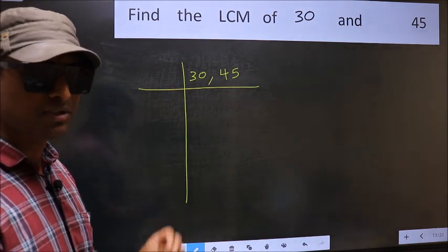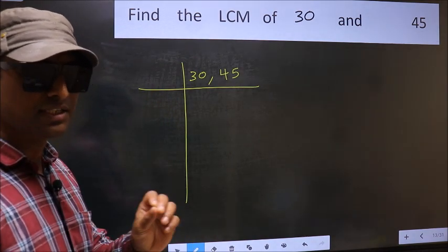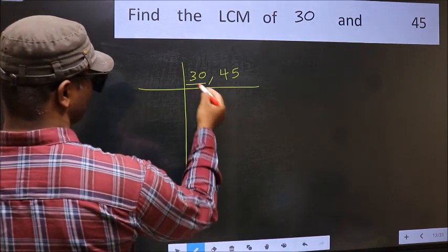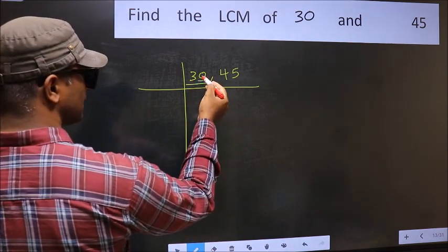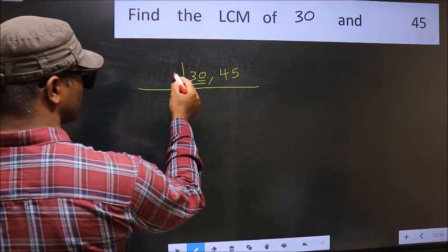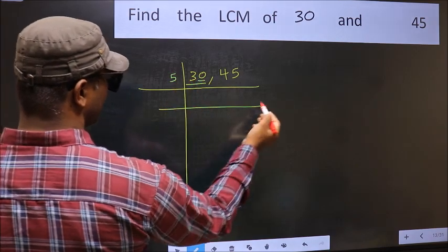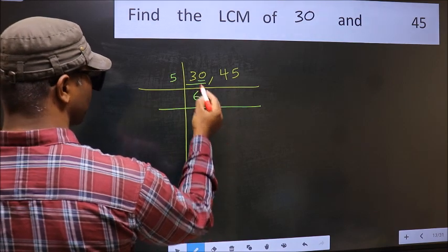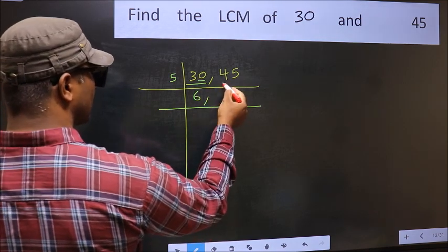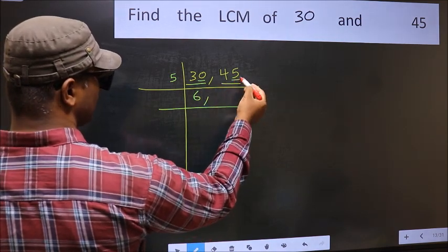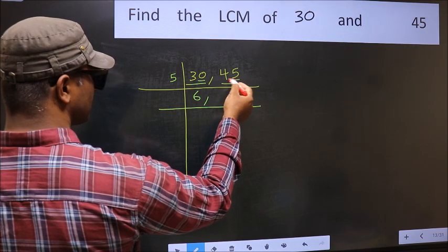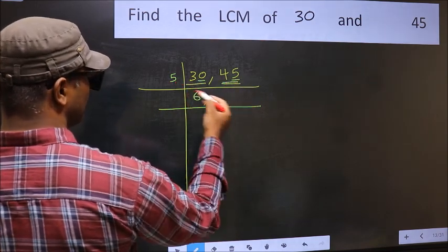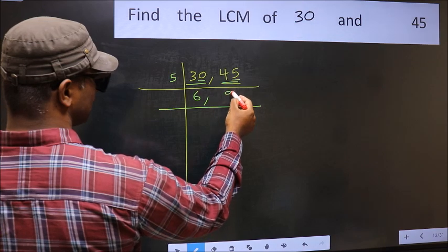Now focus on the first number, which is 30. The last digit is 0, so take 5. When do we get 30 in the 5 table? 5 times 6 is 30. The other number is 45 — last digit is 5, so it is also divisible by 5. When do we get 45 in the 5 table? 5 times 9 is 45.